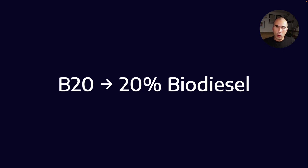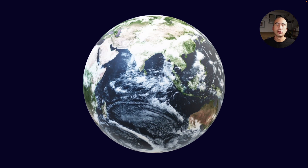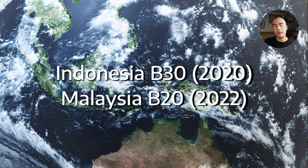When biodiesel is marketed, you'll typically see it called something like B5, B10, or B20. B20 means the diesel in your engine is 20% biodiesel and therefore 80% crude oil derived. Around the world, there are different mandates: Indonesia brought a mandate in 2020 that all diesel be B30 — 30% biodiesel. Malaysia has a view this year to bringing about B20. These countries tend to import a lot of diesel, and they also have huge palm plantations as a rich source for biodiesel.